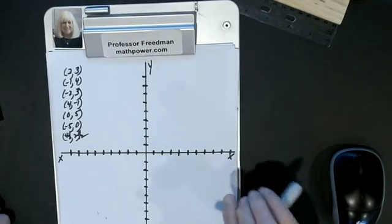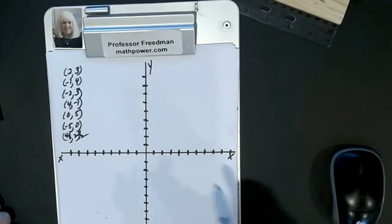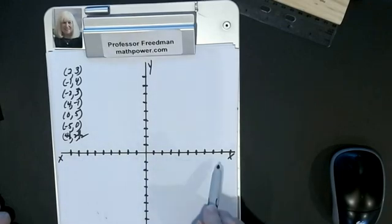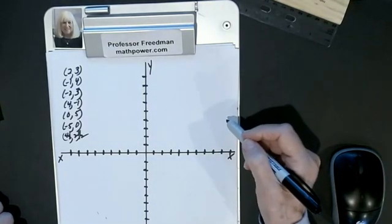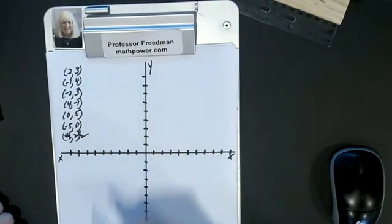This is my rectangular coordinate system. My x-axis is my horizontal axis. My y-axis is my vertical axis. It is broken up into quadrants.